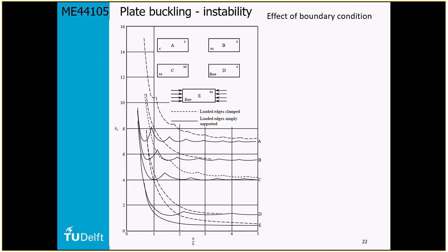Up until now we only talked about simply supported construction — SS, simply supported. We also make a difference between the edges that are clamped or simply supported. The thick line is the default. Simple support gives k approximately four, which is the curve we discussed.